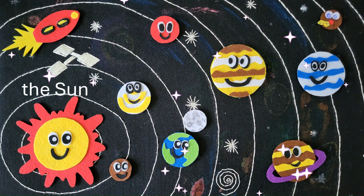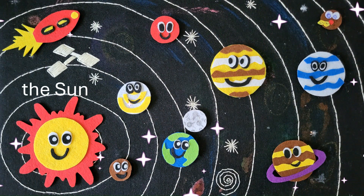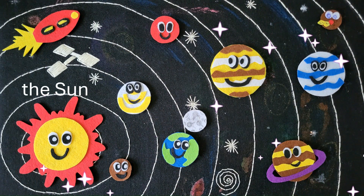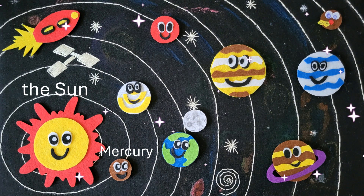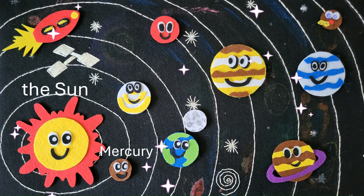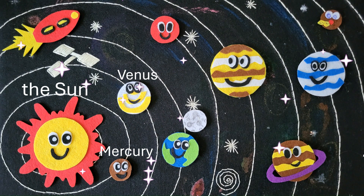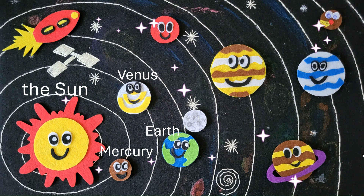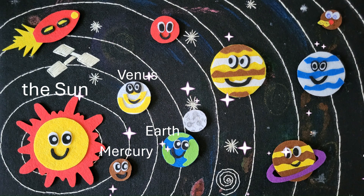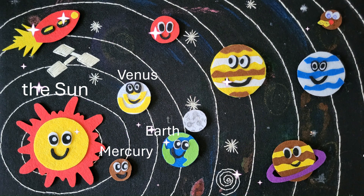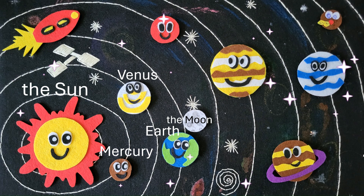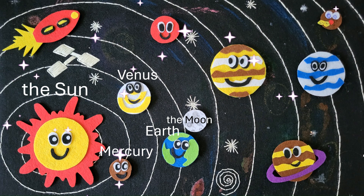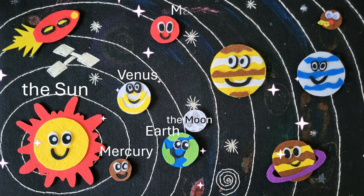First comes our star, the Sun, then Mercury, then Venus, then our planet Earth, and our natural satellite the Moon, then comes Mars.